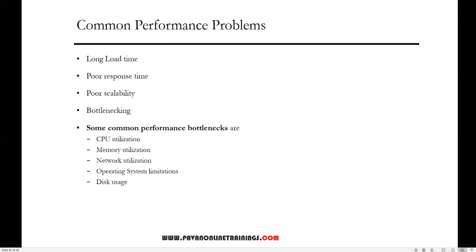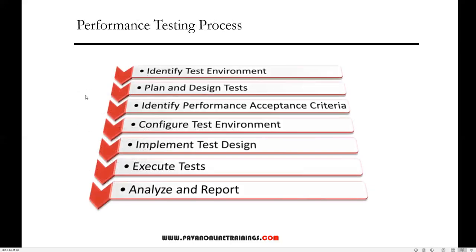Bottlenecks are obstructions in a system that degrade overall performance. Bottlenecking occurs when either coding errors or hardware issues cause a decrease of throughput under certain loads — often caused by one faulty section of code. The fix involves finding the section of code causing the slowdown and either fixing poor running processes or adding additional hardware. Common performance bottlenecks include CPU utilization, memory utilization, network utilization, operating system limitations, and disk usage.